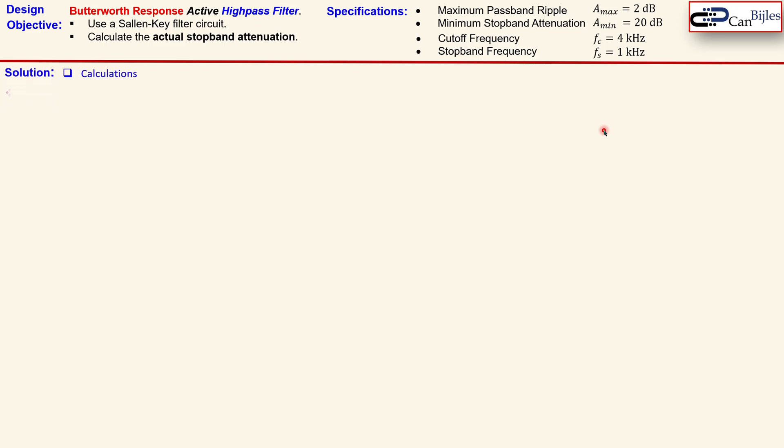Okay, first the calculations. We start first with the filter order of our high-pass filter circuit. So we start with the scaling of this A_max and A_minimum to the epsilon_p. It is actually shown here, this formula. So we substitute here the 2 and we get here the scaling of 0.7648.